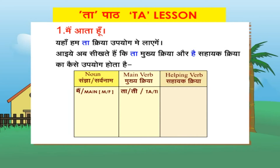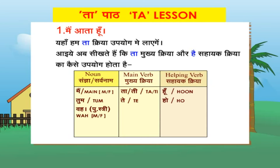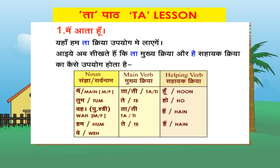मैं ता/ती हूँ, तुम ते हो, वह पुर्लिंग/स्त्रीलिंग ता/ती हैं. हम ते हैं. वे ते हैं.